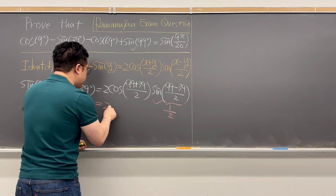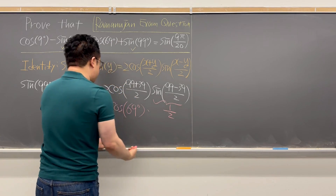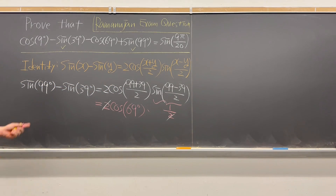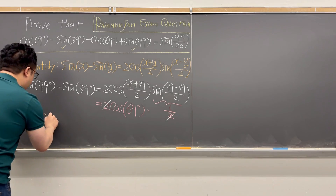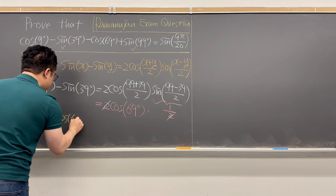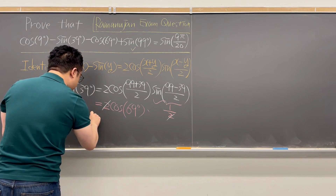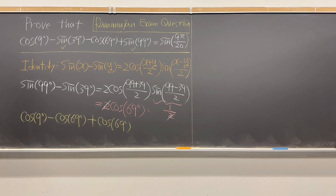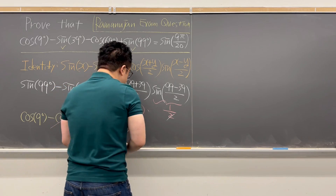So the expression becomes 2 times cosine 69° times 1/2, and those two cancel out, giving us cosine 69°. We can now rewrite the left-hand side as cosine 9° minus cosine 69°, and then we also have plus cosine 69°. Those two cosine 69° terms cancel each other out.